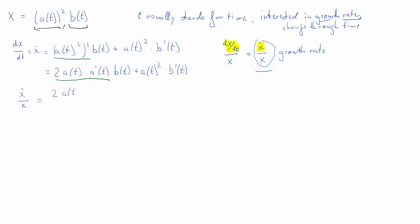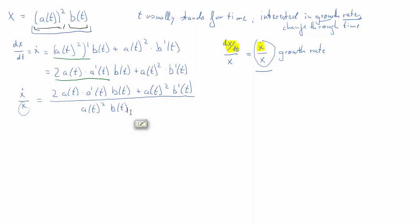In the numerator we replicate what we have for ẋ — that entire term — and then we divide by x. x here is a(t)² times b(t). We could stop here, but let's see whether we can simplify. In both summed terms we have something that almost includes a(t)² and b(t), so we can possibly factor to get there.